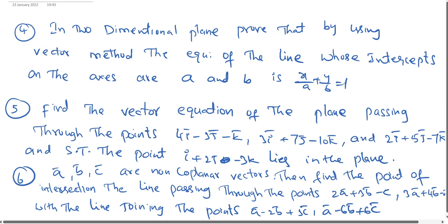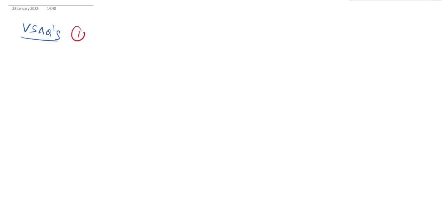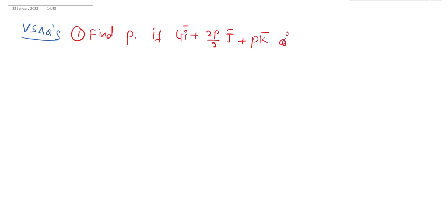These six problems are very, very important for AP board exams. Now VSAQs — very short answer type questions. First one: Find p if 4ī + (2p/3)j̄ + pk̄ is parallel to ī + 2j̄ + 3k̄.